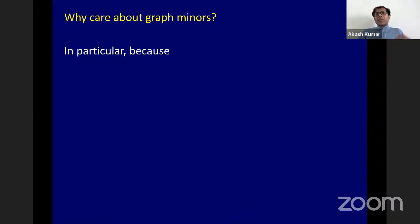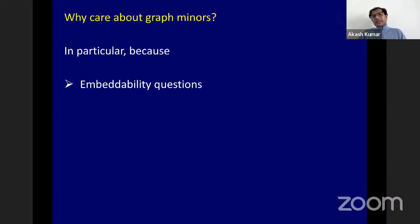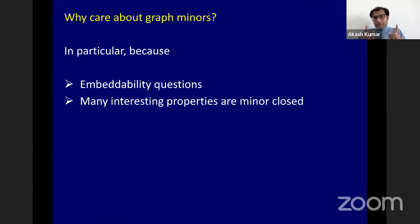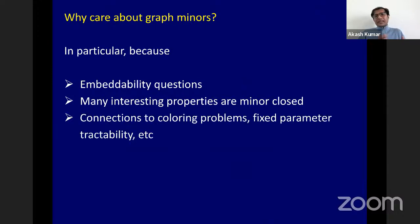You should care about graph minors because it helps you answer truckloads of interesting questions. For example, embeddability questions — can I embed my graph in the two-dimensional plane without edges hitting each other? You can ask this about more exotic surfaces like a coffee cup. Also, lots of interesting graph properties end up being minor-closed — for example, the property of being acyclic. If a graph is acyclic, all of its minors are also acyclic. Finally, graph minors have intimate connections with coloring problems and the entire area of fixed parameter tractability, thanks to the notion of treewidth.